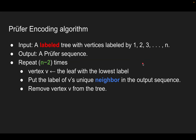The Prüfer encoding algorithm takes the following form. The input is a labeled tree with vertices labeled 1, 2, all the way until n. The output is a Prüfer sequence of length n minus 2.